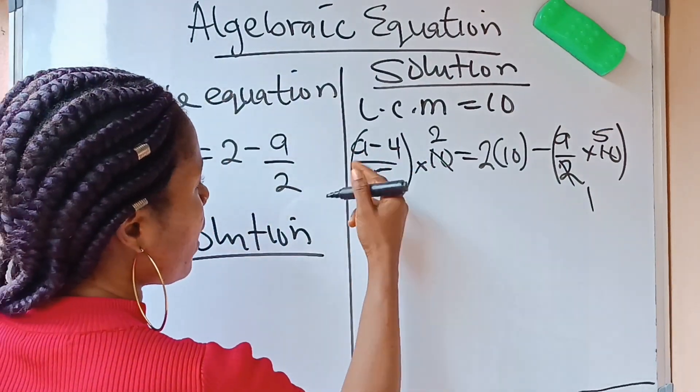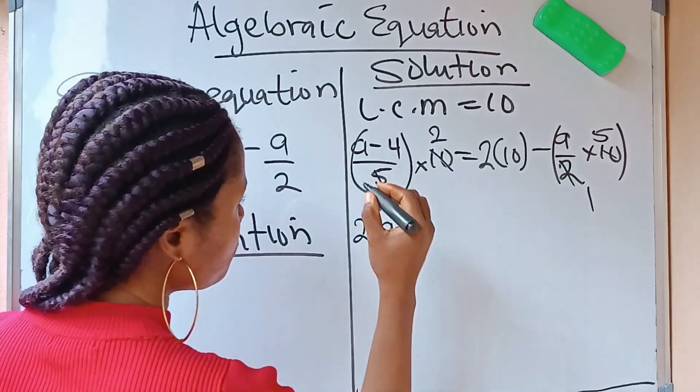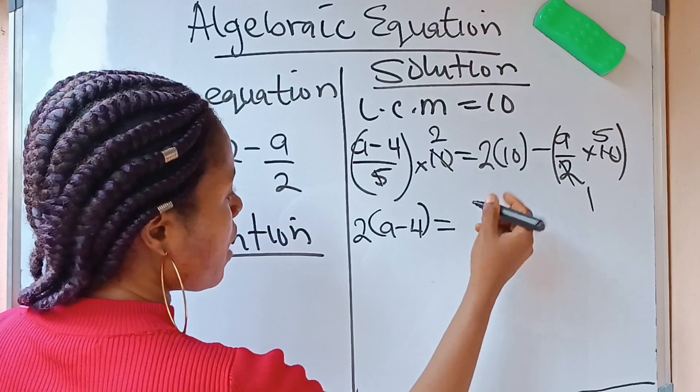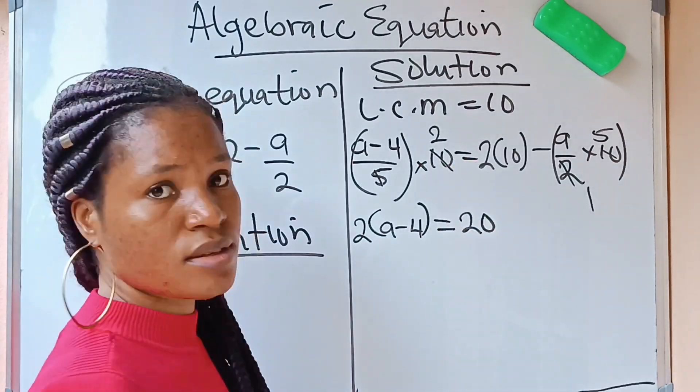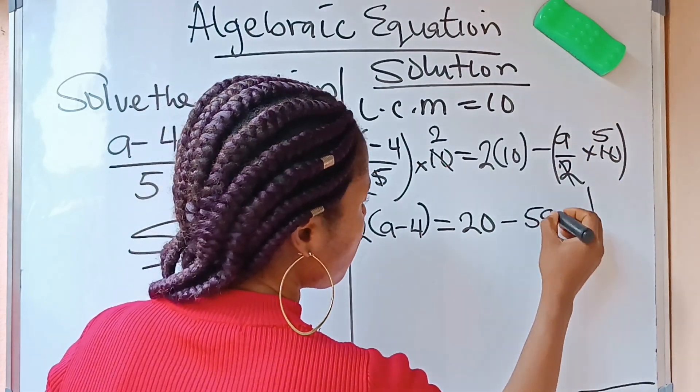We have A minus 4 in brackets with 2 outside. So essentially, as 2 brackets, A minus 4 is equal to 2 times 10 is 20. Minus A times 5 is 5A.